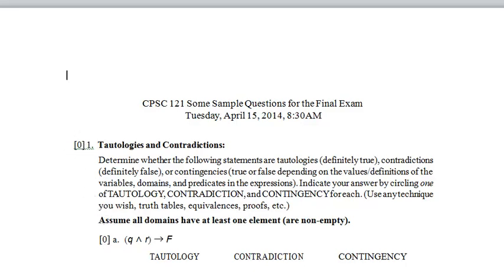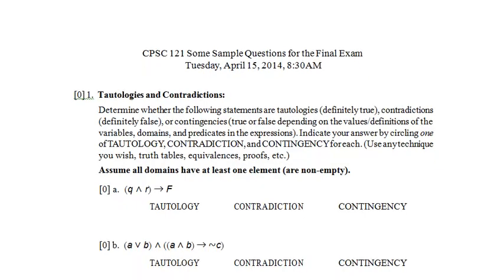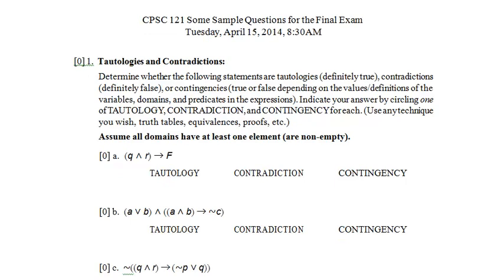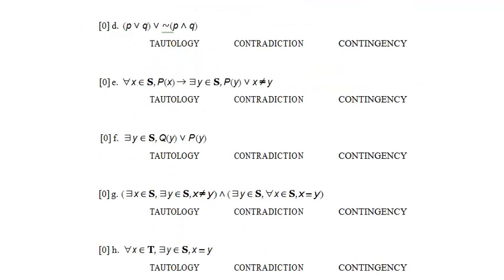The very first thing I would do is skim through all of the questions. I'd skim through the tautologies and contradictions question, just quickly reading what it's asking me to do - determining whether statements are definitely true or definitely false, or true or false depending on variables, domains, predicates, and expressions. It's multiple choice, which is promising because it'll probably be quick. I'm not going to leave it blank since there's no penalty for guessing. Something like Q and R arrow F, I can figure out pretty quickly whether that's a tautology or contradiction.